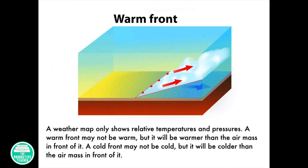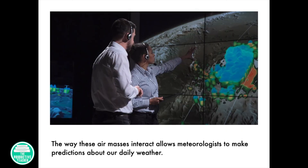A weather map only shows relative temperatures and pressures. A warm front may not be warm but it will be warmer than the air mass in front of it. A cold front may not be cold but it will be colder than the air mass in front of it. The way these air masses interact allows meteorologists to make predictions about our daily weather.